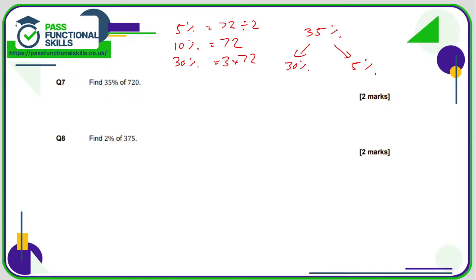Half of 72 is 36 and 3 times 72, 2, 3 is 6, 3, 7 is 21. So now all we need to do is combine the 216 and the 36. 12, carry 1, 3, 4, 5. So that is 252.